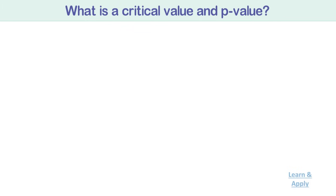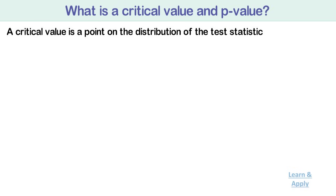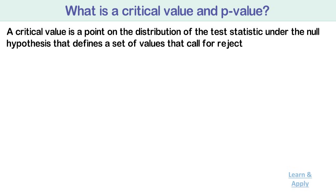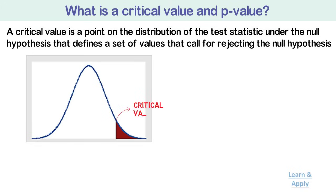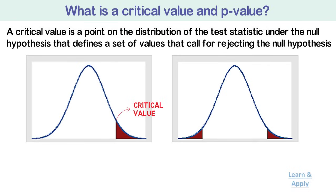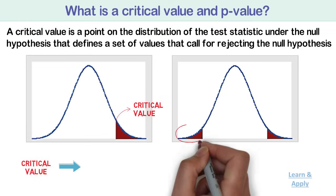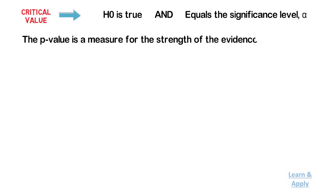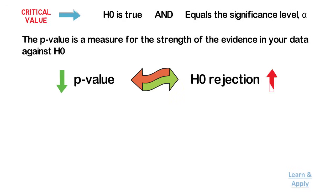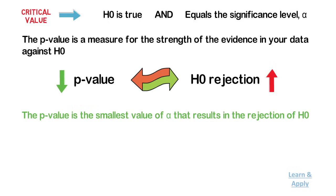What is a critical value and p-value? A critical value is a point on the distribution of the test statistic under the null hypothesis that defines a set of values calling for rejecting the null hypothesis — this set is called the critical or rejection region. One-sided tests have one critical value and two-sided tests have two critical values. The critical values are determined so that the probability that the test statistic falls in the rejection region when the null hypothesis is true equals the significance level alpha. The p-value is a measure of the strength of the evidence in your data against H0; the smaller the p-value, the stronger the sample evidence is for rejecting H0. The p-value is the smallest value of alpha that results in the rejection of H0.